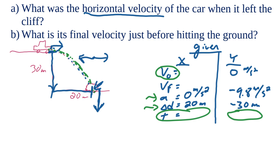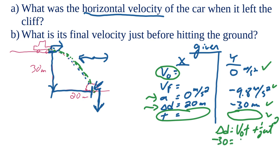In the y direction we know three things, so we can find the fourth. I'll use the equation d = v₀t + ½at². Plugging in: displacement is −30, initial velocity is zero, so we get −30 = ½(−9.8)t². Solving for t gives us t = 2.47 seconds.